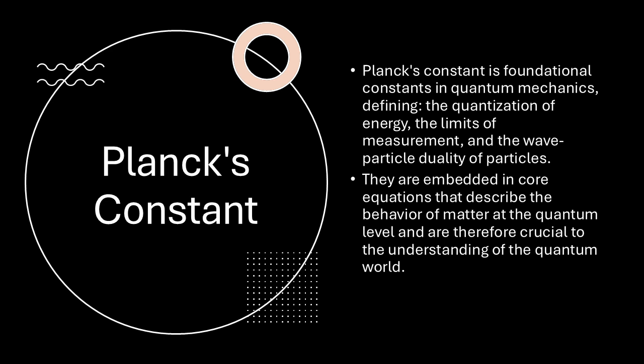Well, physicists were trying to figure out how the color of light emitted by an object relates to its temperature. Think of how a piece of metal glows red when it's heated, like the heating elements on a stove. But the problem was that classical physics predicted that as an object got hotter, it should emit an infinite amount of energy in the ultraviolet part of the spectrum, which obviously doesn't happen.